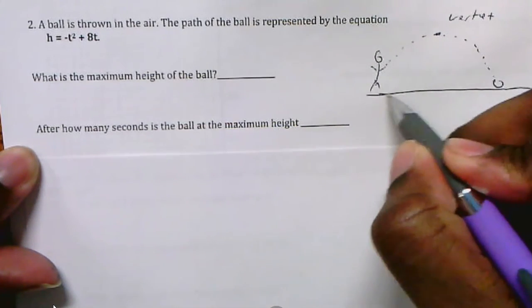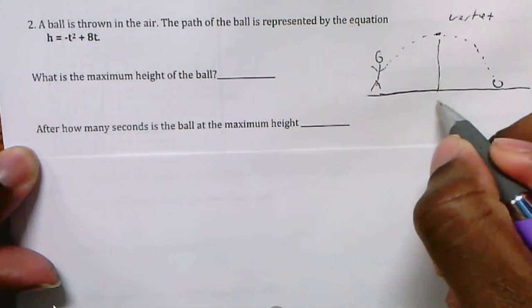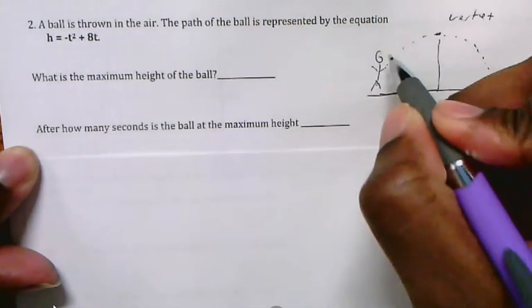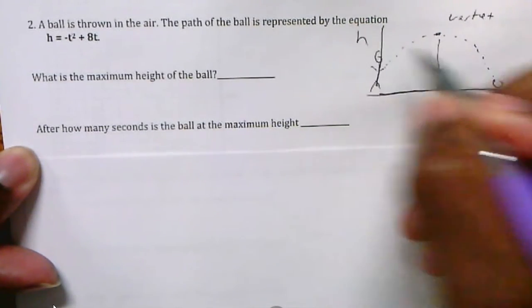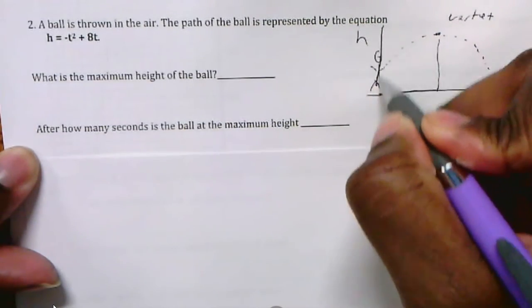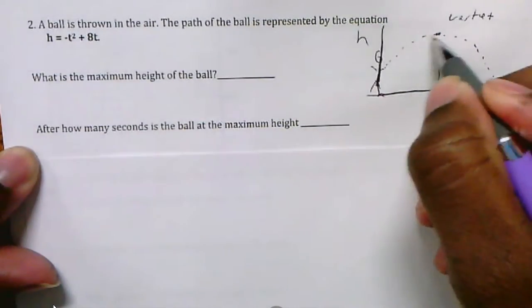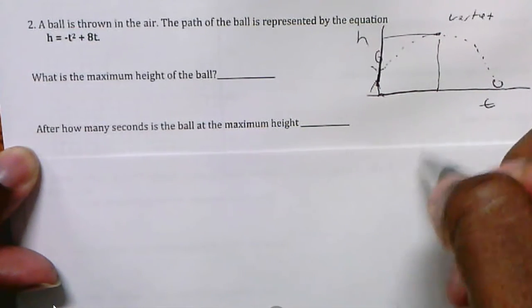Basically that's going to be the x direction. You want to find out this is going to be time and this is going to be the height. This is going to be an L shape graph. So we're looking for our height and we're looking for our time. That's the vertex.